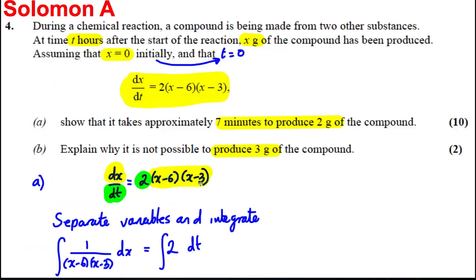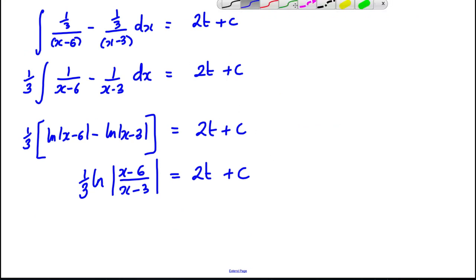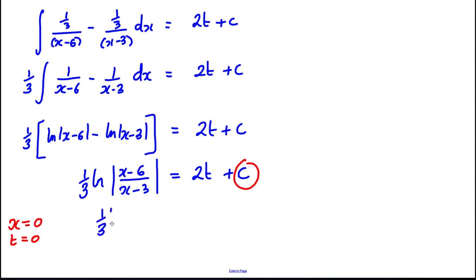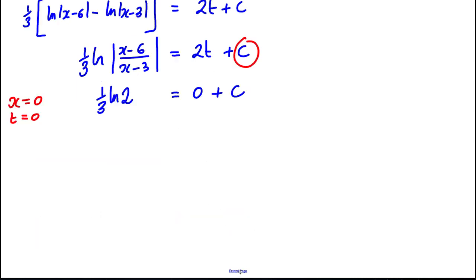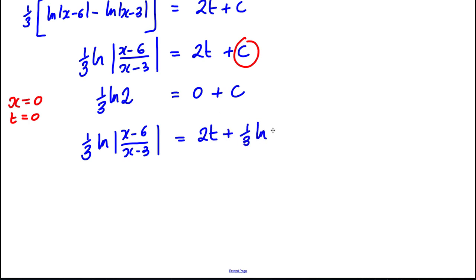So I've solved the differential equation. Now I'll apply the boundary condition X = 0 when T = 0 to find the constant C. Substituting: (1/3) ln|(0 − 6)/(0 − 3)| = (1/3) ln(6/3) = (1/3) ln 2 equals 0 + C. So C = (1/3) ln 2. Therefore the particular solution is (1/3) ln|(X − 6)/(X − 3)| = 2T + (1/3) ln 2.